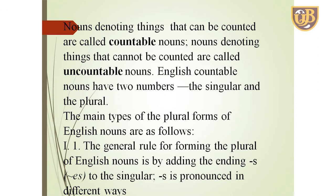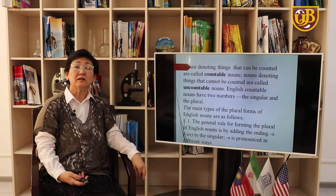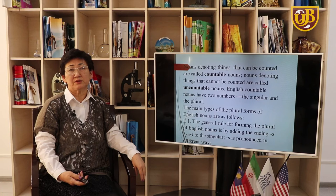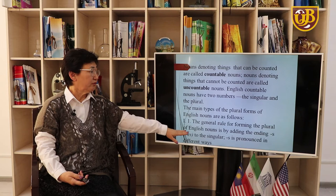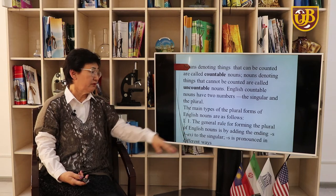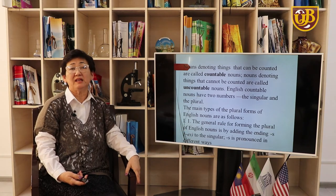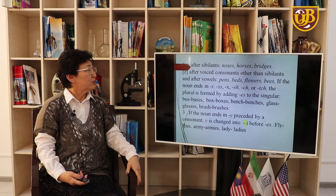Nouns denoting things that can be counted are called countable nouns. Nouns denoting things that cannot be counted are called uncountable nouns. English countable nouns have two numbers: singular and plural. The general rule for forming the plural of English nouns is by adding the ending -s to the singular, pronounced in different ways.